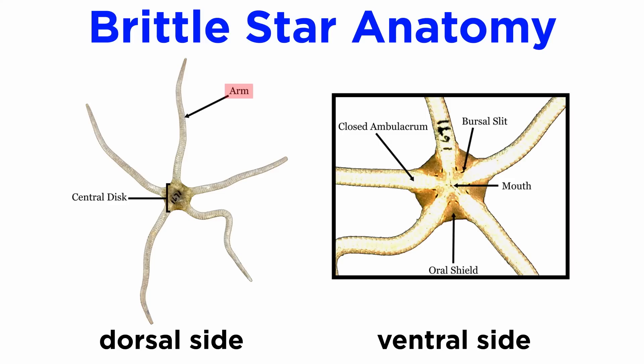Since their arms are so slender, nearly all of the brittle star organs are confined to the central disc. They have a sac-like stomach, no intestine or anus, and indigestible food is expelled through the mouth.